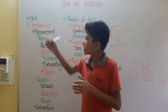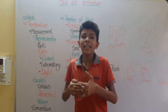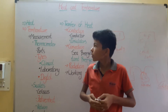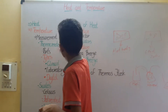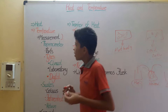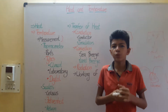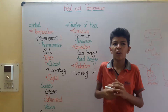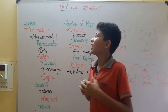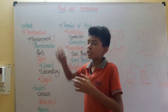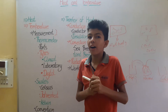Let's move to temperature. Temperature is the degree of hotness or coldness of a body. How can we measure temperature? Temperature is measured by an instrument called a thermometer. A thermometer is an instrument used to measure the temperature of a body — how cold or how hot it is.